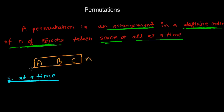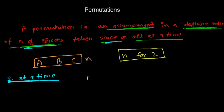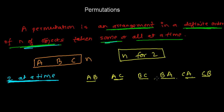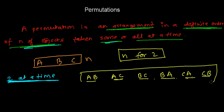Permutation is just arrangement. We're going to arrange a, b, c and by taking two at a time, how many possible arrangements do we have? We can arrange like ab, ac, bc, ba, ca, or cb. So one, two, three, four, five, six — there are six ways of arranging a, b, and c into two places. This is the permutation of three objects taken two at a time.